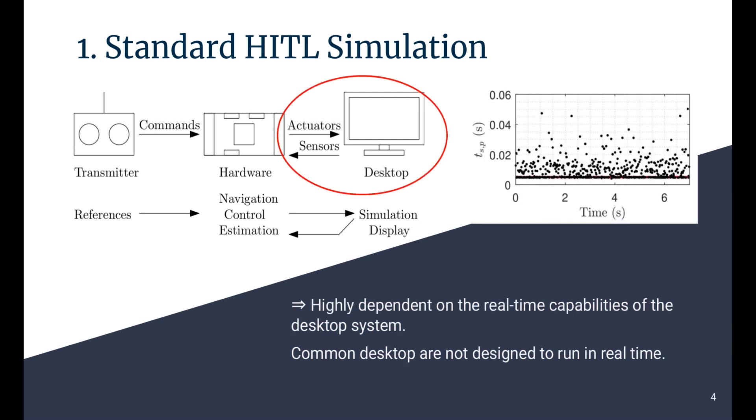Sending actuator signals to the desktop computer and waiting to receive the sensor signals might be an issue, as most common desktop computers are not designed to run in real-time. So you might end up with inaccurate sampling time, such as the figure on the right. Most of the time the controller is able to deal with this inaccurate sampling time, but in some cases, and for me that was during my thesis when I was running an HITL setup for a tail sitter in Simulink, the controller was not able to stabilize the system.